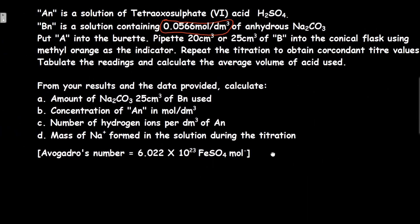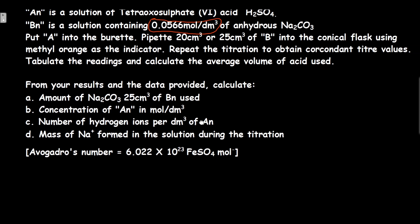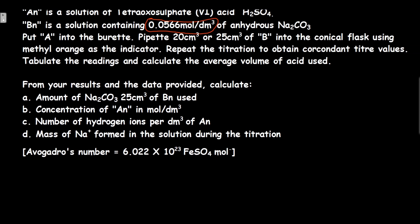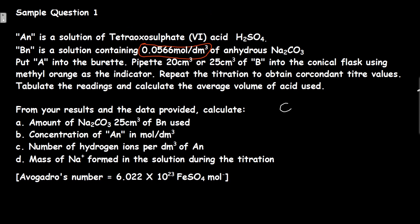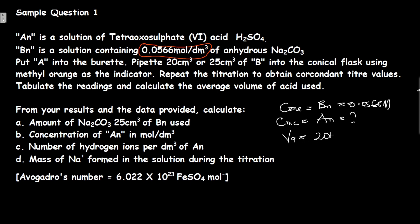The next question says: calculate the concentration of AN in mole per dm³. To calculate the concentration of AN, note that we already have the concentration of BN as 0.05 mole per dm³. We need to find the concentration of AN, which is unknown. We know the volume of AN — the average volume of acid used — is 20.25 cm³. The volume of the base, sodium carbonate, is the 25 cm³ measured by pipette.